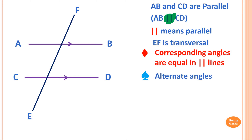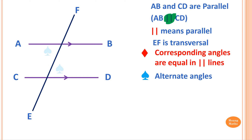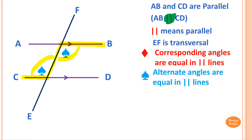Now, alternate angles. Alternate angles look like the letter Z. This angle and this angle here are alternate. If you trace the line, it's like a letter Z. The rule is: alternate angles are equal in parallel lines.